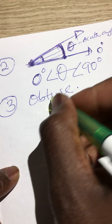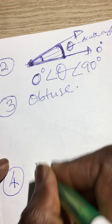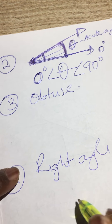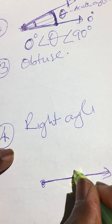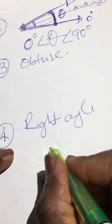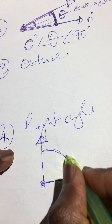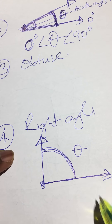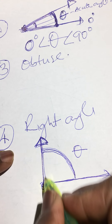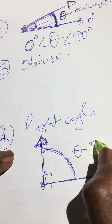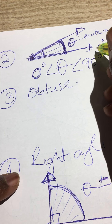Before looking at obtuse angle, let's look at the right angle. A right angle comes from the same movement — when you lift up the arc of a circle and the ray stands perpendicular, we have extended the arc to form a bigger angle. If theta is exactly at that perpendicular line, we call that a right angle, because theta at that point is equal to 90 degrees.